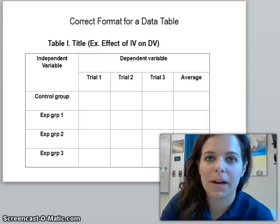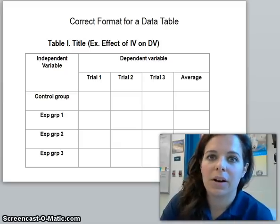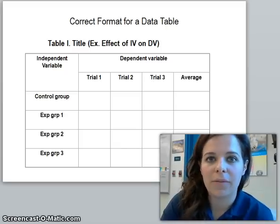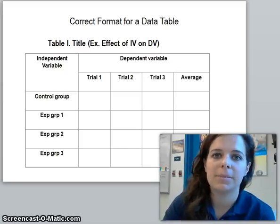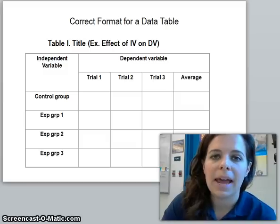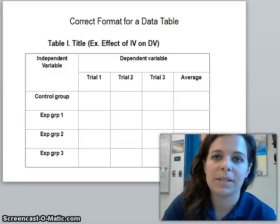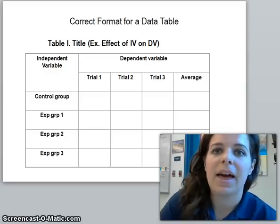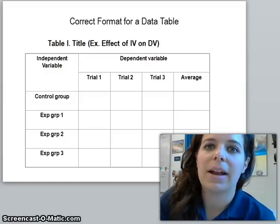The first thing I want to go over: remember that your procedures as well as your introduction are in paragraph form, so you're not making a list. The only thing that should be in a list is your materials. Your procedures need to be past tense, third person, in complete sentences. There's an example of that on your lab report format if you forget how to do that.